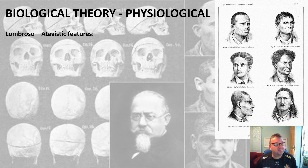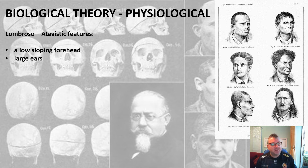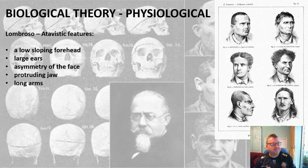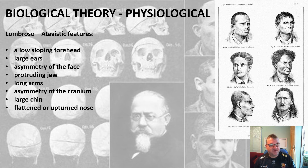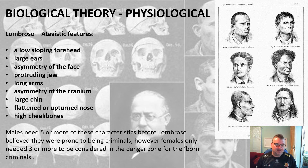Lombroso identified atavistic features as including a low sloping forehead, large ears, asymmetry of the face, a protruding jawline, long arms, asymmetry of the cranium, a large chin, and a flattened nose coupled with high cheekbones. He concluded that males needed five or more of these characteristics to be prone to criminality, whereas females only needed three to be in that danger zone of being born criminal.